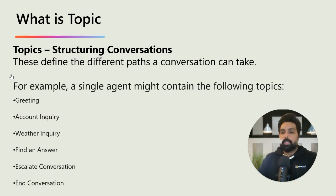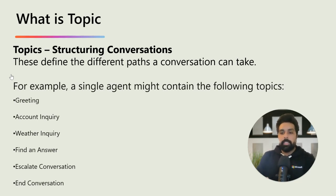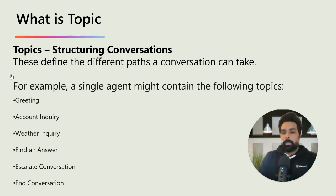One is the trigger phrase and then the conversation node. The trigger phrase is the words or the question that starts a topic — for example, getting weather status, opening hours, getting appointment, cancelling appointment. Anything which triggers a question or a conversation is defined as part of trigger phrases. The conversation node is the response and the action that the agent takes based on your triggering phrases. With a well-structured topic, your AI agent can guide users throughout meaningful interaction.